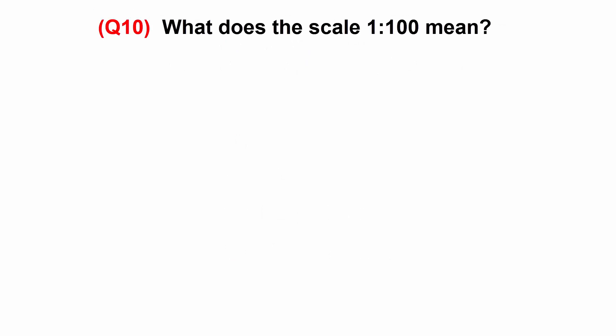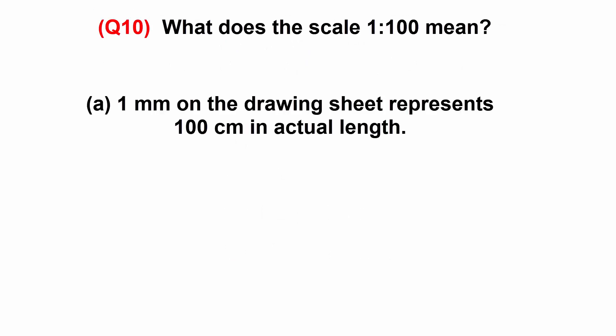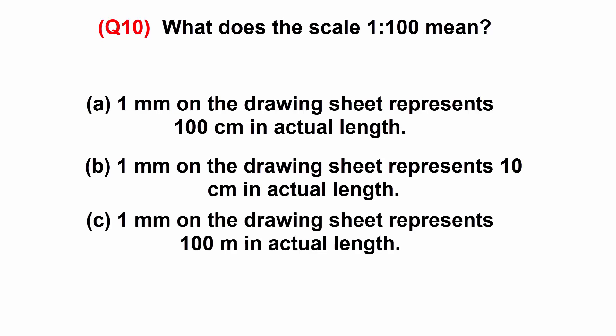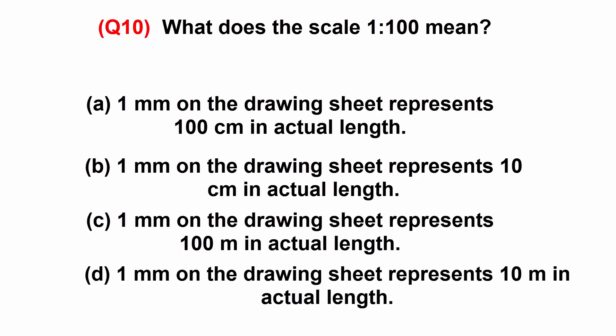What does the scale 1 is to 100 mean? A: one millimeter on the drawing sheet represents one hundred centimeter in actual length. B: one millimeter on the drawing sheet represents 10 centimeter in actual length. C: one millimeter on the drawing sheet represents one hundred meter in actual length. Or D: 1 millimeter on the drawing sheet represents 10 meter in actual length.